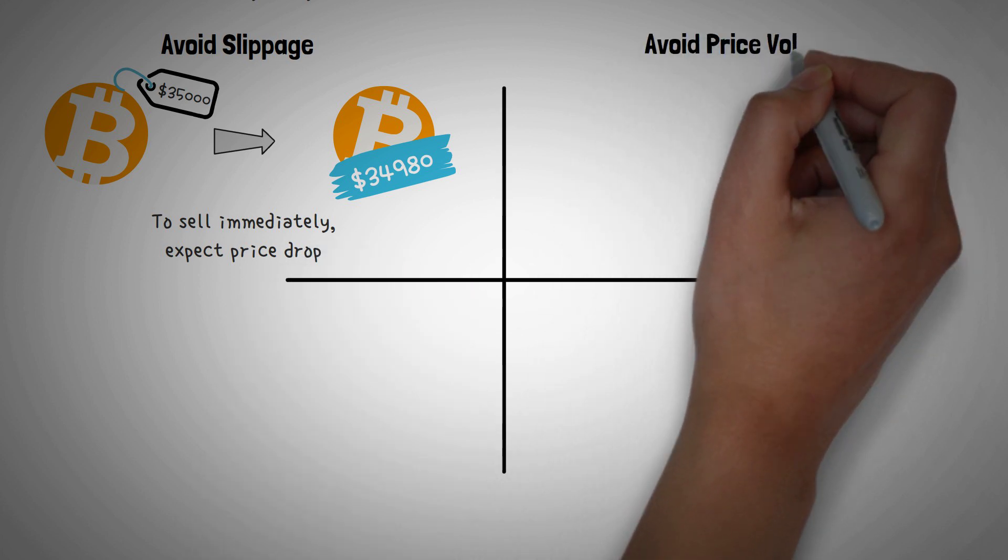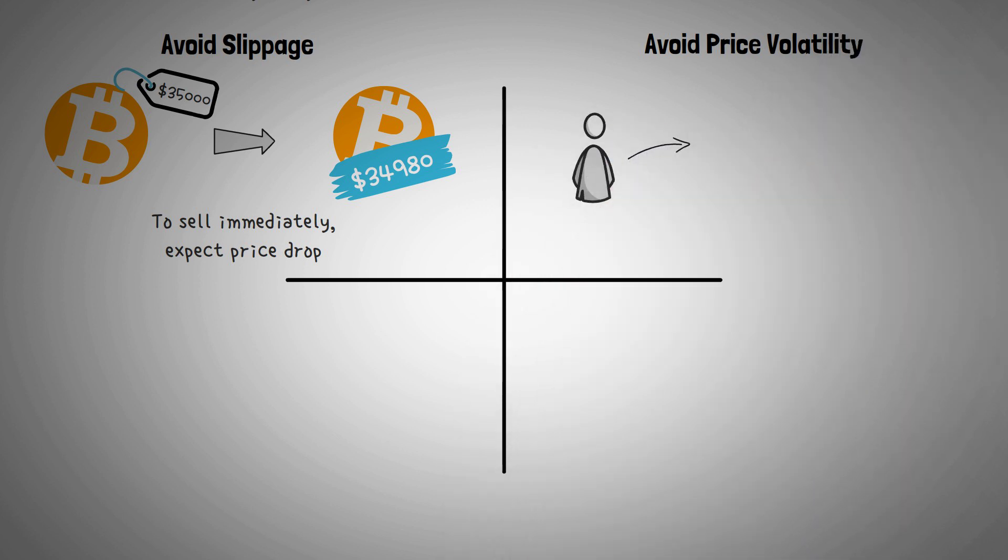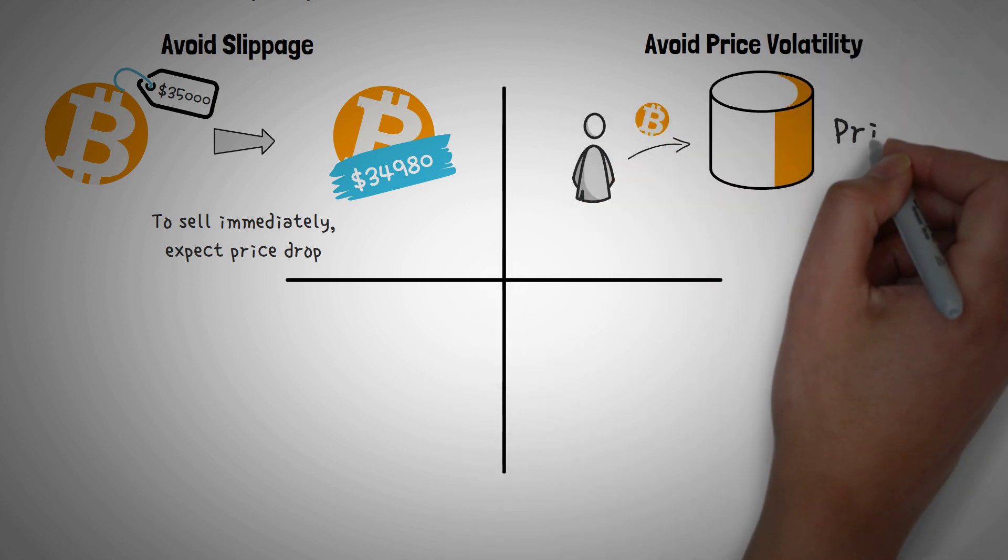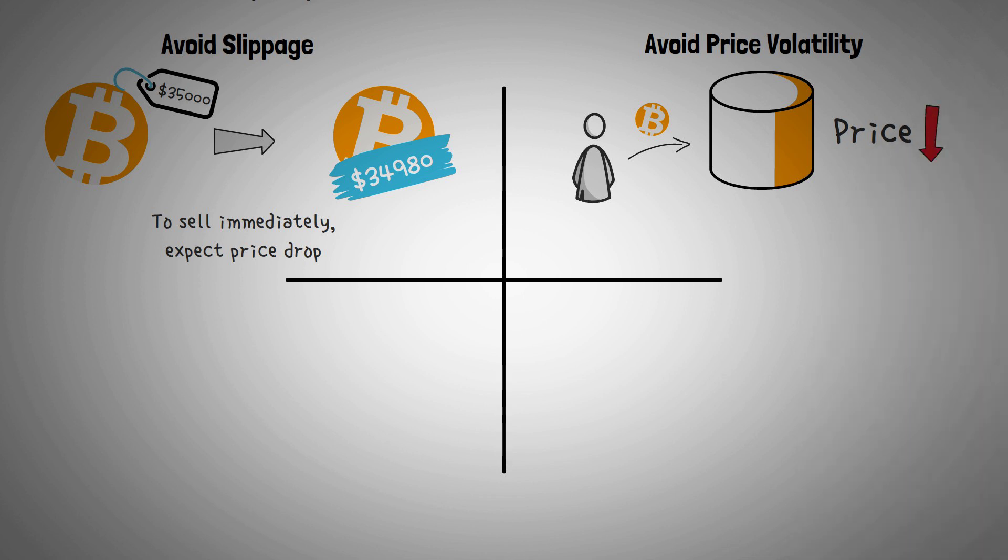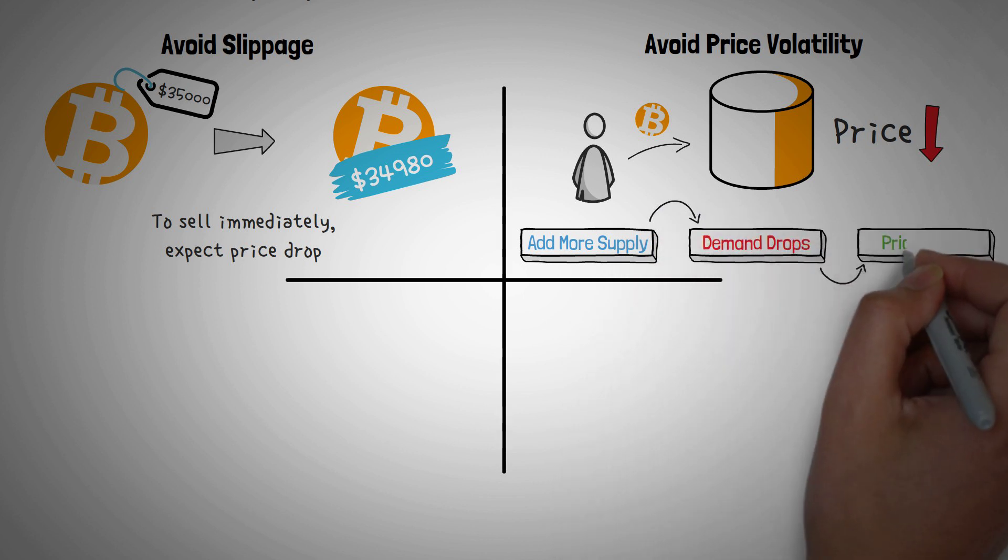Number two is to avoid causing prices to plummet. Whenever you dump a bunch of crypto back into the market, you can effectively change the price of crypto. Due to how supply and demand works, when you add more supply, it'll cause the demand to drop. And when the demand drops, so will the price.